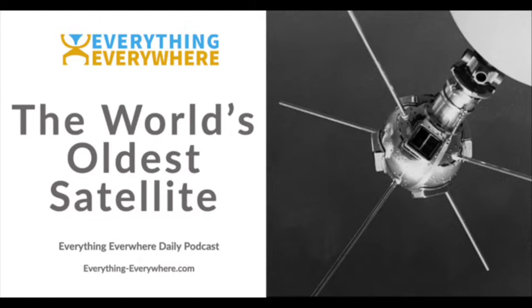People woke up to discover that the Russians had put an artificial satellite named Sputnik into orbit. It was a national punch to the gut. Not only was there national embarrassment, but there was also a great deal of concern. If the Russians could launch something into orbit, then they could drop a nuclear weapon pretty much anywhere on Earth.